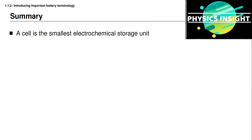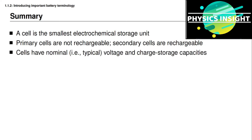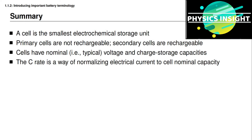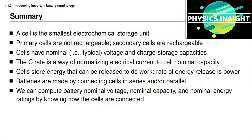To summarize: a cell is the smallest electrochemical storage unit. Primary cells are not rechargeable; secondary cells are rechargeable. Cells have a nominal voltage and a nominal charge storage capacity. The C-rate is a way of normalizing electrical current according to a cell's nominal capacity. Cells store energy that can later be released to do work, and the rate of energy release is called power. We make batteries by connecting cells in series and/or parallel, and we can compute battery nominal voltage, capacity, and energy ratings by knowing how the individual cells are connected.